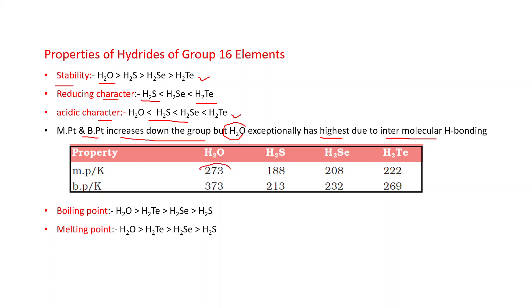You can see from these values. This is for water, and this is for H2S, and these are for remaining hydrides. So if you want to arrange these hydrides according to boiling point and melting point, we can say H2O has the highest, then H2Te, H2Se, and H2S. Same order for the melting point.